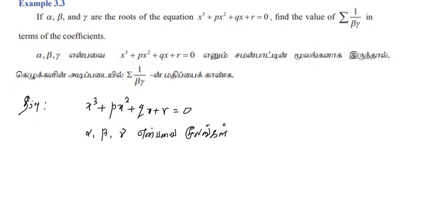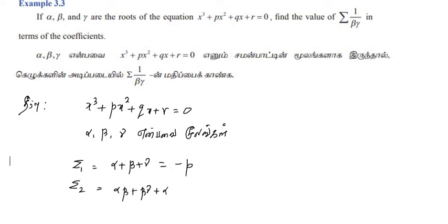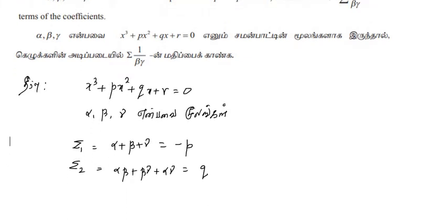Alpha plus beta plus gamma — that is sigma1 — is the coefficient of x². This is the first relation: sigma1 equals minus p. Sigma2, if we take the roots in pairs, is alpha·beta plus beta·gamma plus alpha·gamma. This is the third term, equal to q. The next term is sigma3.